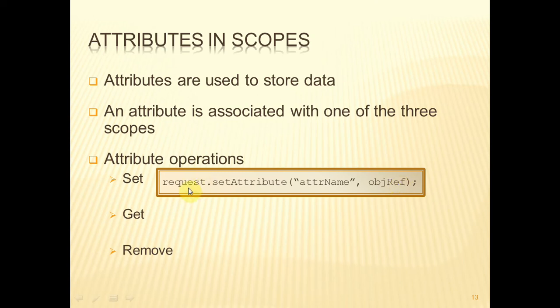we can then call from the request object dot setAttribute, and we specify two parameters. The first is a string, which is the name by which this attribute is going to be known within the scope, and then the reference to the object that is going to be the attribute. This is for the request. Of course, if we're going to do this for a session, then we have a slightly different reference here.